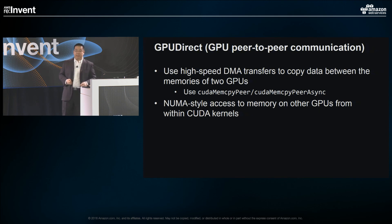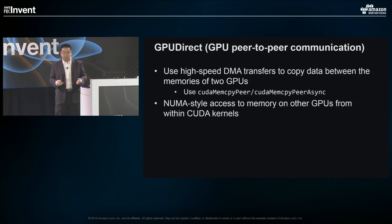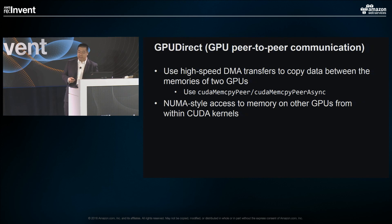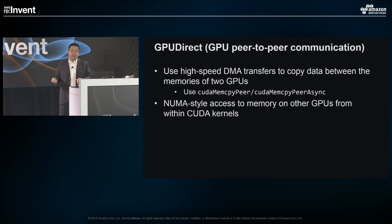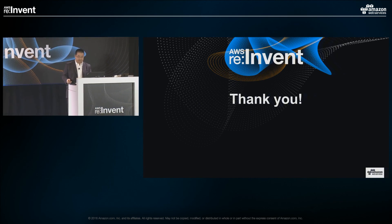The last topic is GPU Direct. P2 instances support GPU peer-to-peer communications, enabling high-speed DMA transfers to copy data between memories of two GPUs using cudaMemcpyPeer or cudaMemcpyPeerAsync, depending on whether you want a blocking or non-blocking call. It also provides native-style access to memory on other GPUs from within CUDA kernels — a very good feature for deep learning or high-frequency workloads on P2 instances. With that, we've reached the end of the session. I really appreciate you being here, and I hope you can take some of this information home and think about what workloads you can migrate from CPU to GPU. We have EC2 documentation, and I'll be available to answer your questions after the session. Thank you very much.